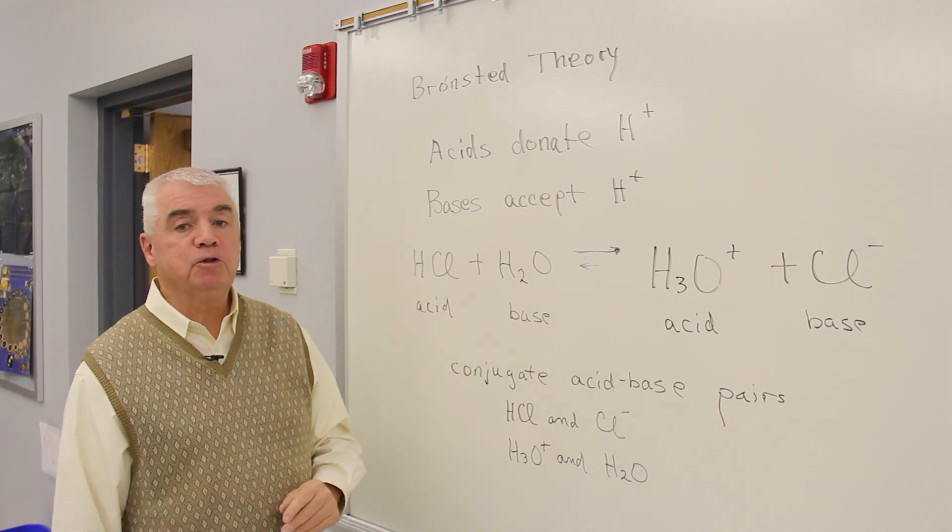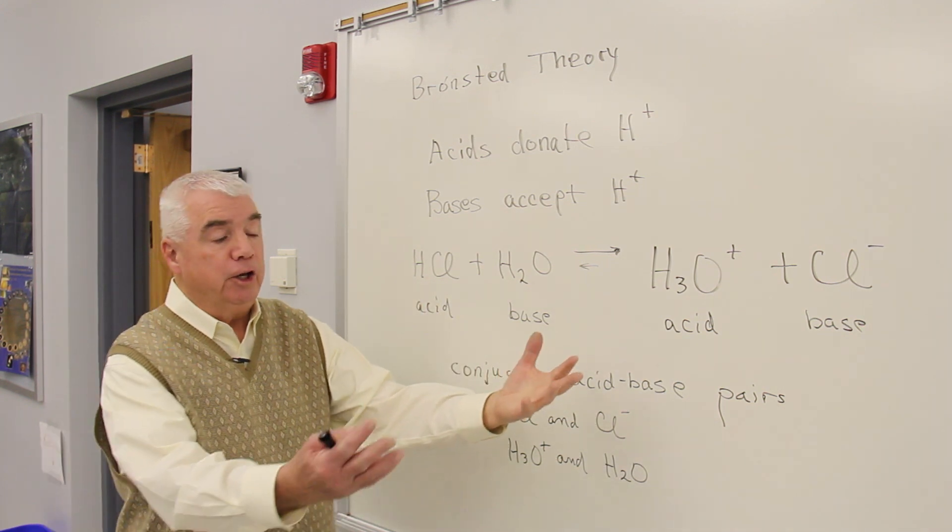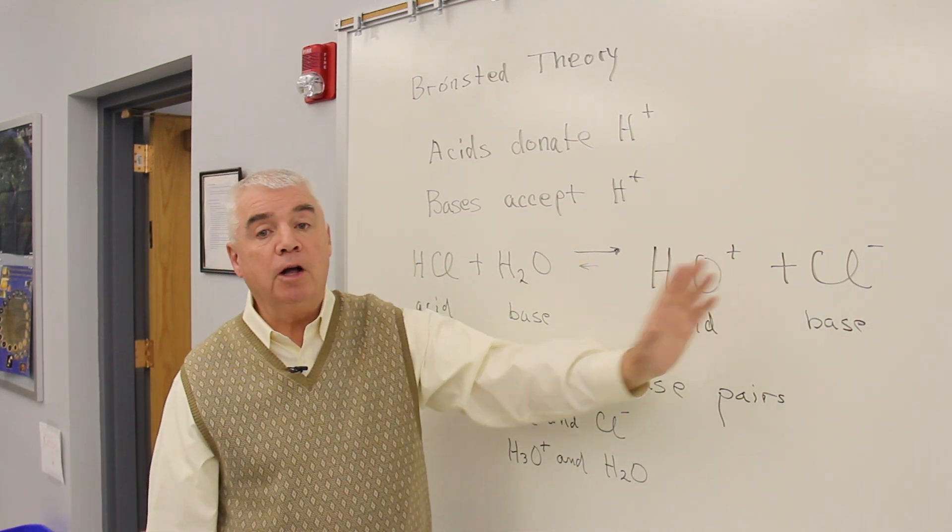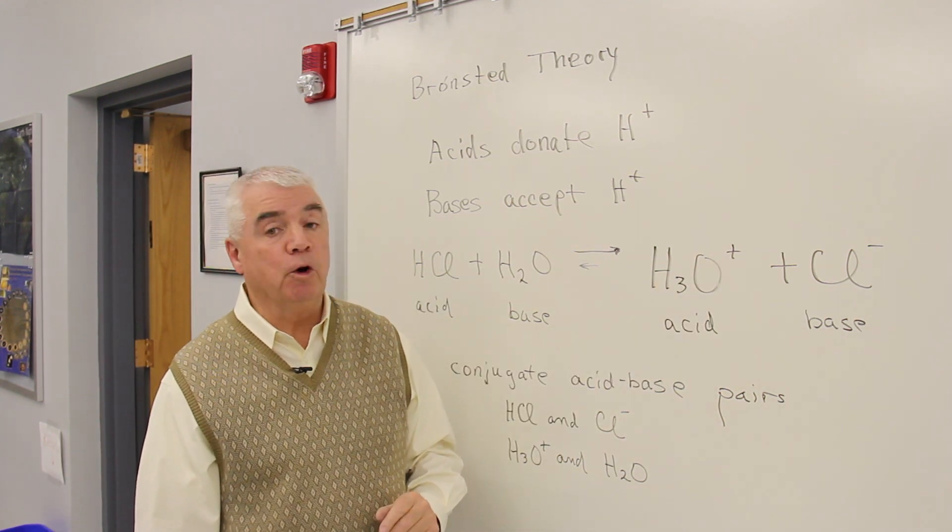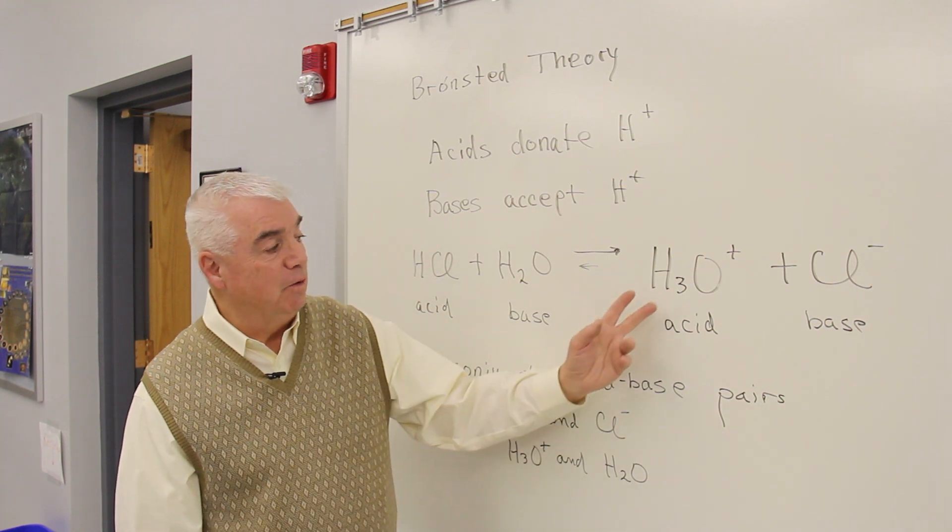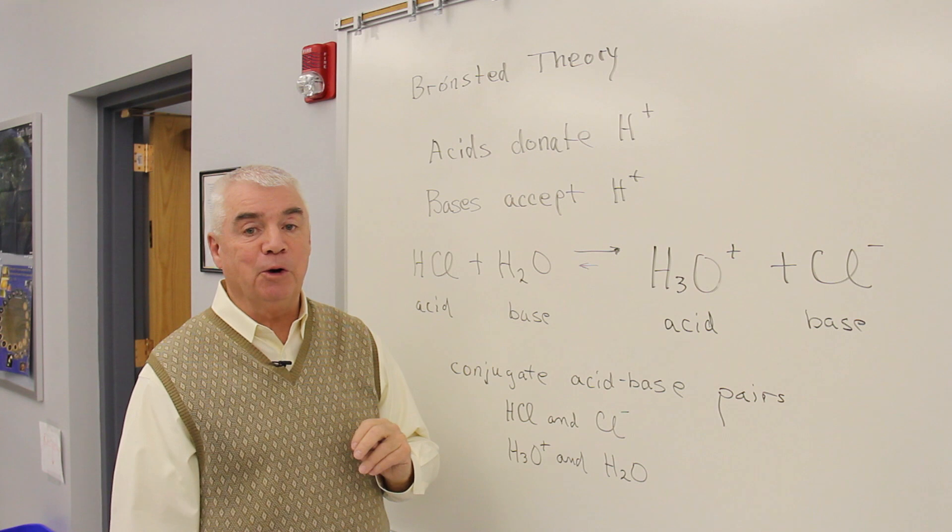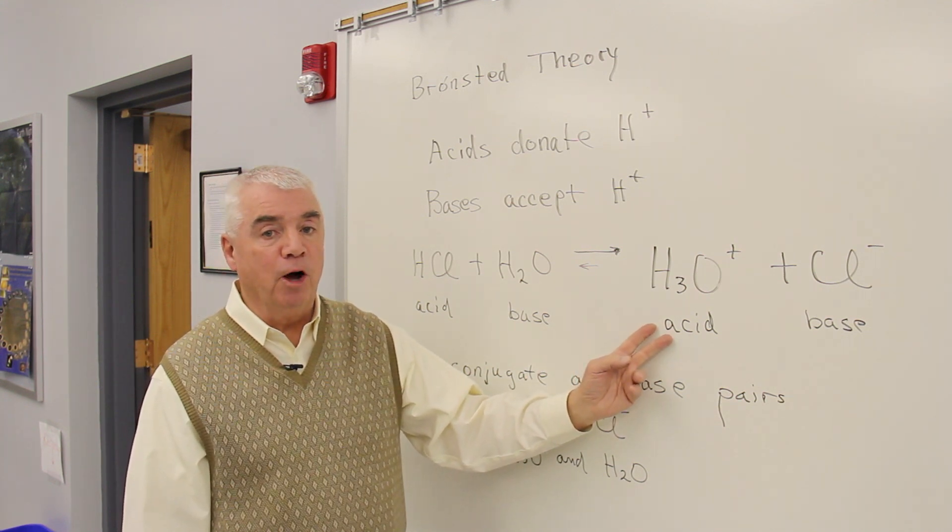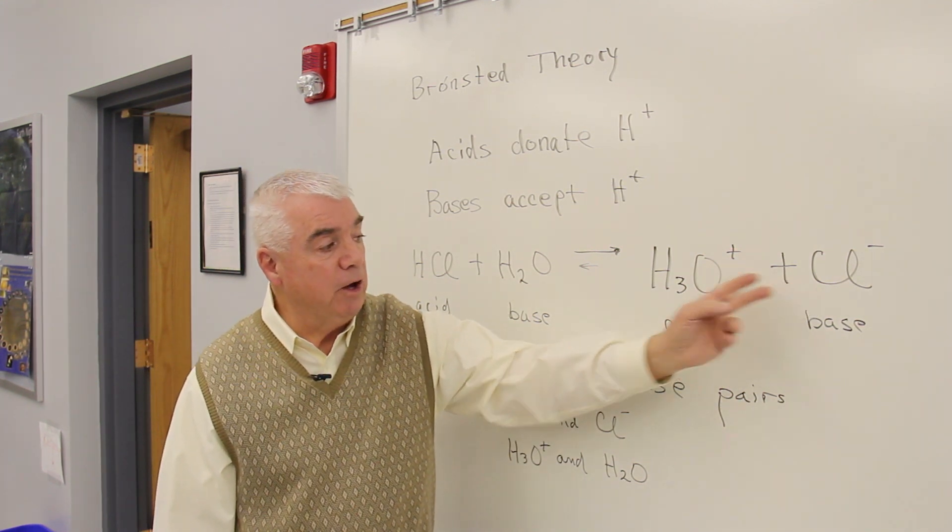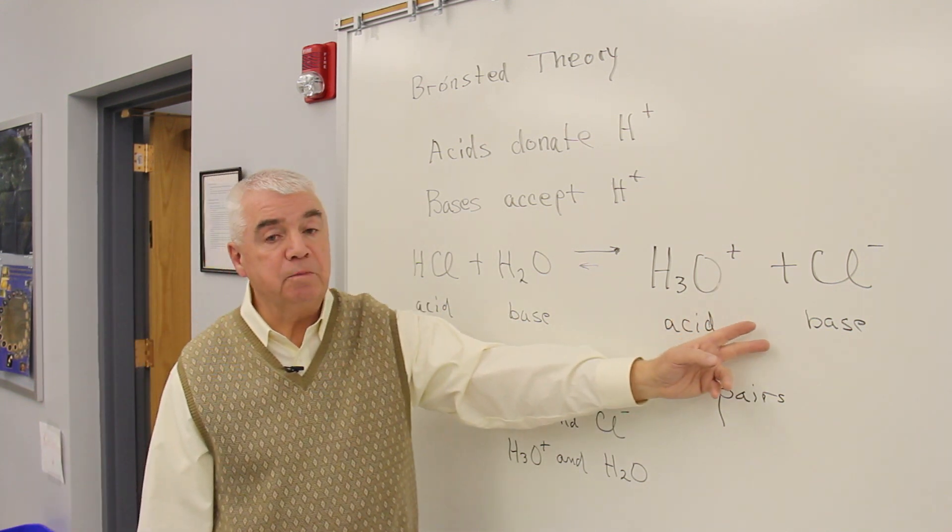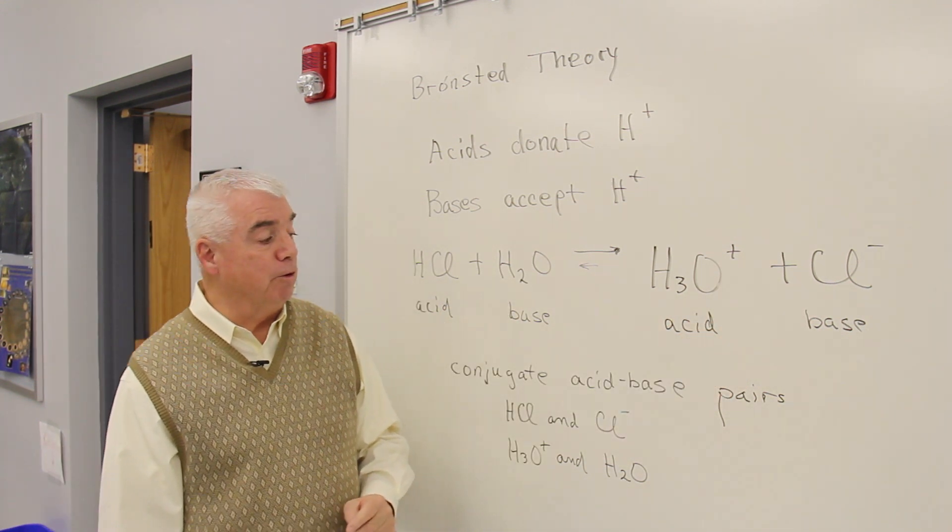Because this is a reversible reaction, it can go the opposite direction. And that means that we have Bronsted acids and bases over on the right-hand side. H3O+, as it comes back to the left, would give up a proton. It must be the Bronsted acid. Cl- accepts a proton, so it must be the base in the reverse reaction.